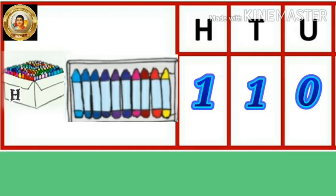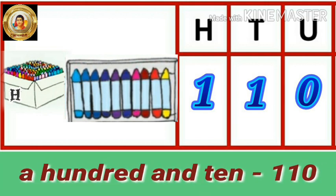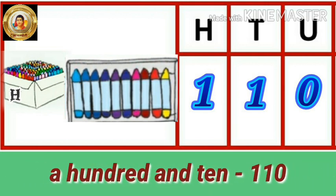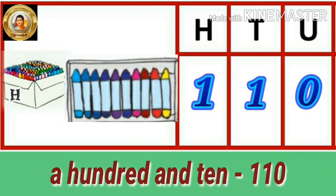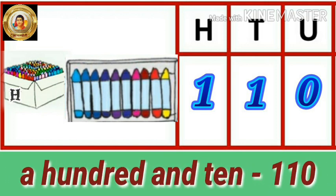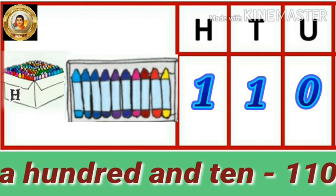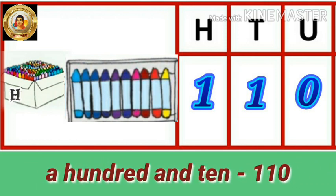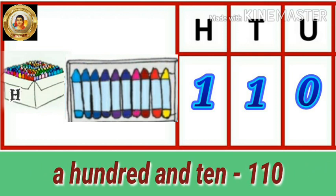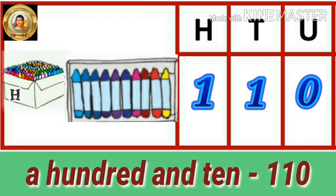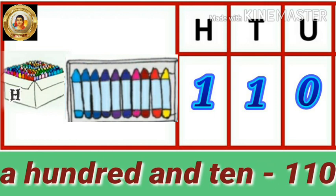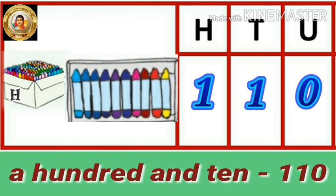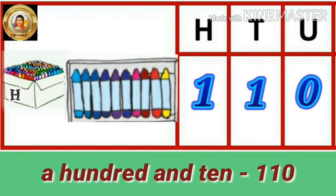Students, look at this chart carefully. Here there is a tens of crayons and also a box of hundred crayons. So how will we write this number? As there is one ten, we write one in the tens place. There are no free crayons, so we write zero in the unit place. We read this number as a hundred and ten.